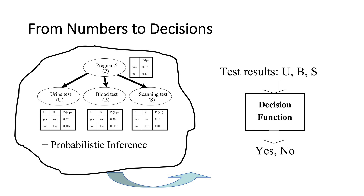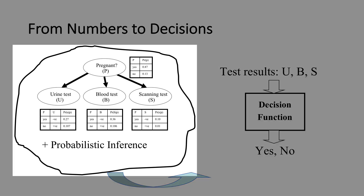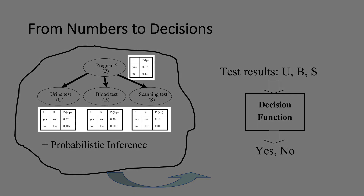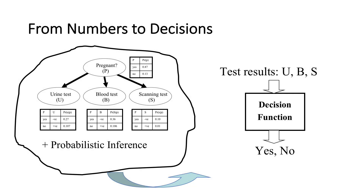This structure is known as the naive Bayes structure, and the numbers quantify the relationship between the features or tests and the class variable — they represent the false positive and negative rates. This is a special type of a more general model called a Bayesian network. You learn the structure from data, you learn the numbers from data, and then in practice you use this model to do classification by doing probabilistic inference, asserting evidence, computing a posterior probability, and then making a decision.